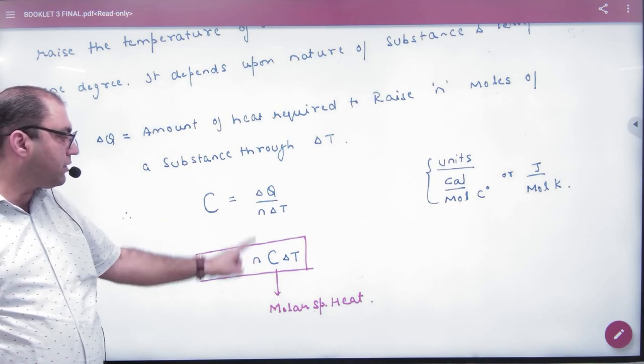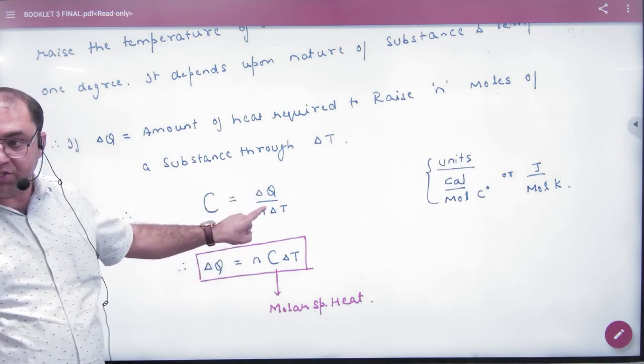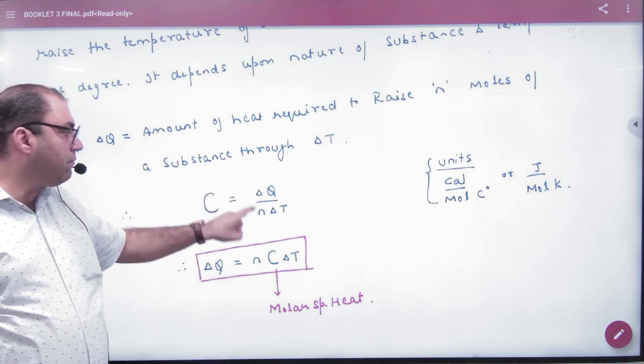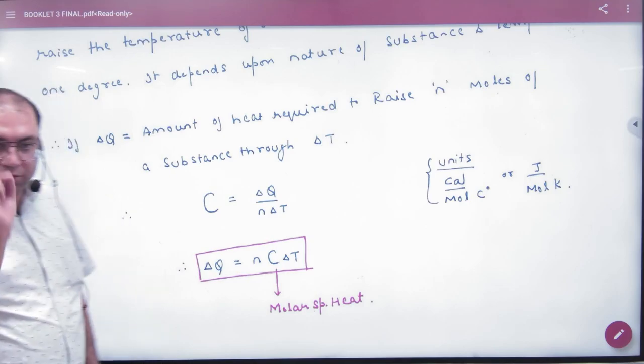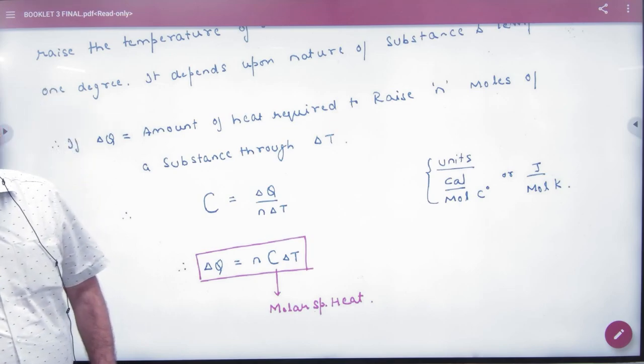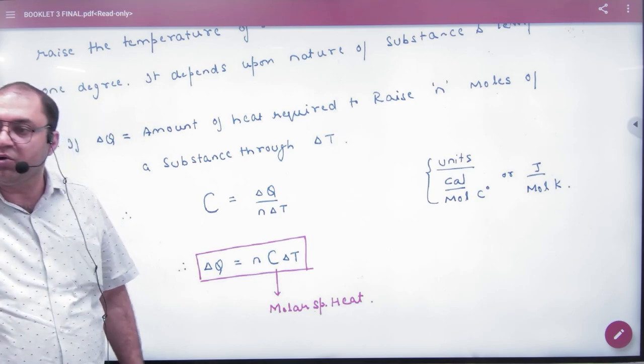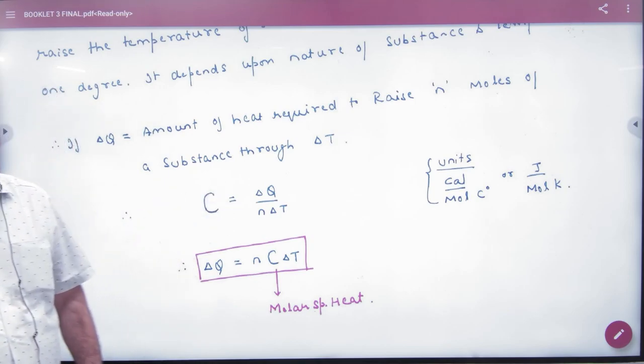So if you talk about units, the unit will be calories per mole per degree celsius, or joules per mole per degree celsius. So here there are moles. So small c when you use it, when you have mass given in kg or grams, small c will work. If there are moles, then you need molar specific heat.